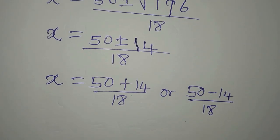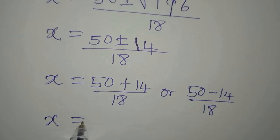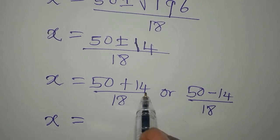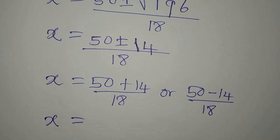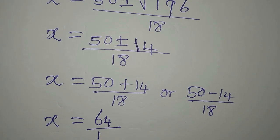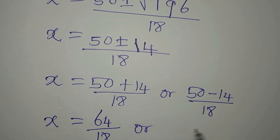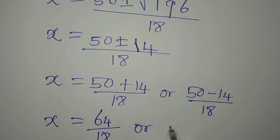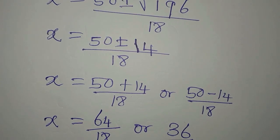So to continue with this, our x is going to be 50 plus 14, which gives us 64 over 18, or 50 minus 14, which gives us 36 over 18.